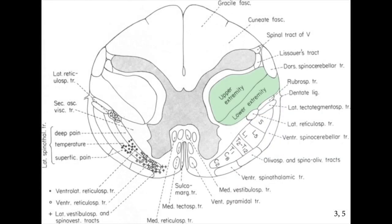The corticospinal tracts lie dorsal to the spinothalamic tracts, while the ventral spinal cerebellar tracts overlie them laterally. Lesions to the spinal cerebellar or corticospinal tracts can lead to post-operative ataxia or weakness of the ipsilateral leg. If the lesion is too high, it is possible to cause contralateral leg weakness. Medially lie the autonomic pathways for vasomotor and genitourinary control found in the lateral horn of the gray matter. Lesions here can result in urinary incontinence and hypotension.